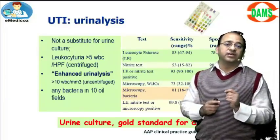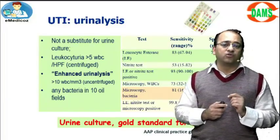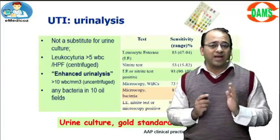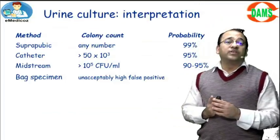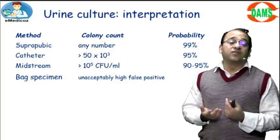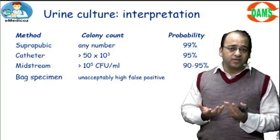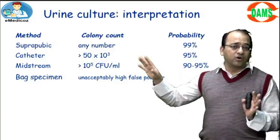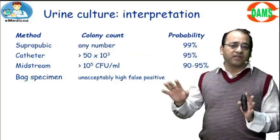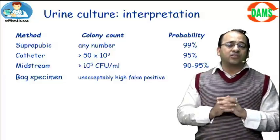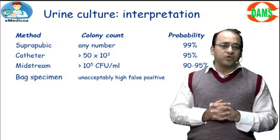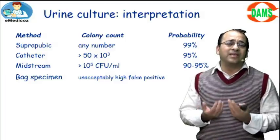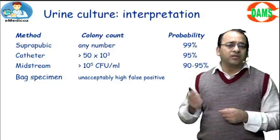Urine culture is still the gold standard to diagnose UTI. The best specimen is a suprapubic aspirate — any organism count on suprapubic is significant. Otherwise, we do a midstream clean-catch sample.